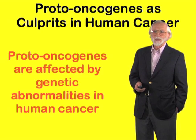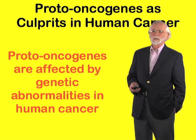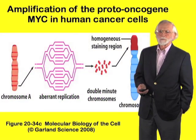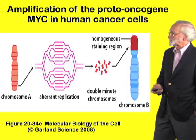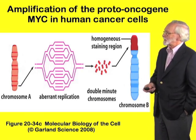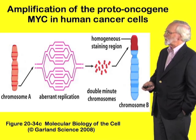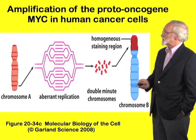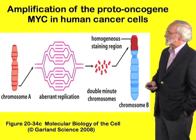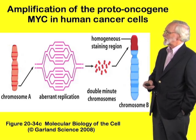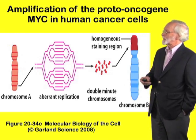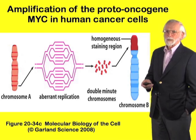Proto-oncogenes are affected by genetic abnormalities in human cancer. Three forms of abnormalities were involved in this discovery. The first was something known as gene amplification. A focus on a chromosome — the DNA at that locus — replicates several or many times over, sometimes giving rise to little chromosomes called double-minute chromosomes, which can reinsert into a chromosome and create what's called a homogeneously staining region. This was first observed with a proto-oncogene known as MYC in human cancer cells.